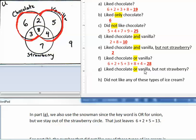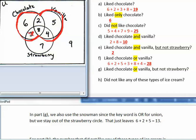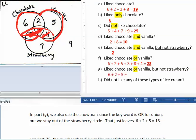In part G, we also use the snowman for chocolate and vanilla, since the keyword for OR is union, but we stay out of the strawberry circle. Not this circle. That just leaves 6 plus 2 plus 5, which equals 13.